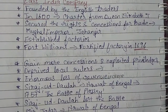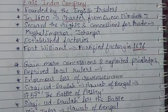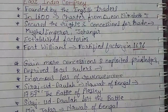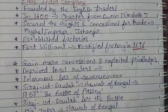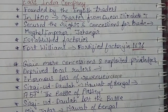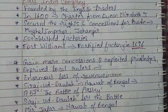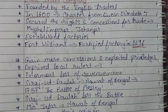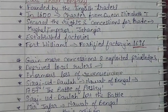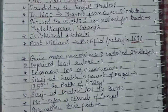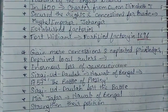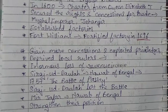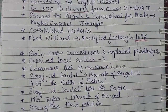The British traders started to deprive the local rulers of their revenues — revenues meaning income. When they started to do this, they caused enormous loss of income to the local rulers in India, and the rulers who were governing at that time were facing a lot of losses in their income.